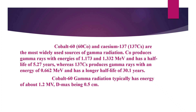Cobalt-60 and cesium-137 are the most widely used sources of gamma radiation. Cobalt-60 produces gamma rays with energies of 1.173 and 1.332 MeV and has a half-life of 5.27 years, whereas cesium-137 produces gamma rays with an energy of 0.662 MeV and a longer half-life of 30.1 years. Cobalt-60 gamma radiation typically has energy of about 1.2 MeV and D-max of 0.5 cm.